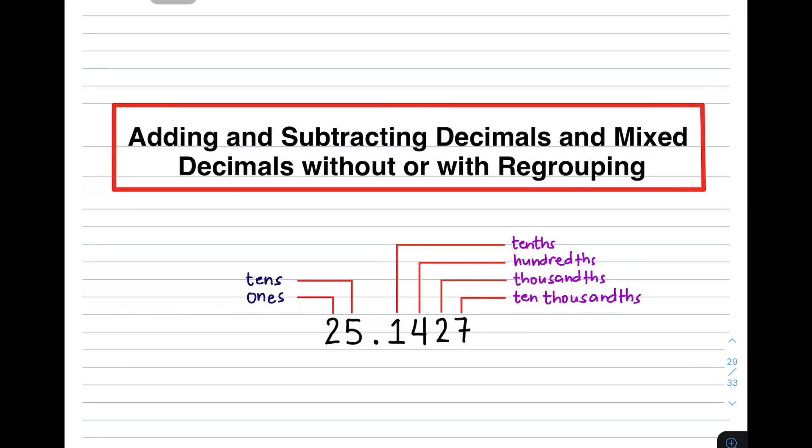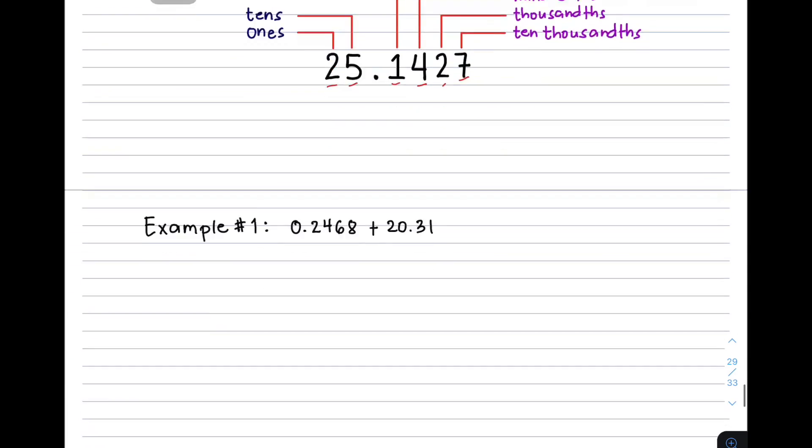So I have here 25.1427. So we need to review the different place value of each digit na meron tayo sa number na ito. So ituntun natin, this one is your ones digit. This is your tens. Tenths. Hundreds. Thousands. Ten thousands. So kung alam nyo na yan, I think you are ready in adding and subtracting decimals.